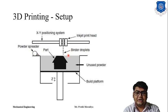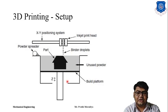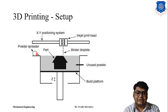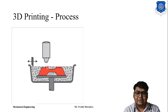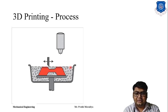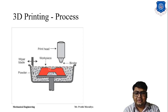A powder spreader adds another layer of powder and the process repeats. Once each layer is printed, the build platform is lowered by one layer, new powder is spread, and the inkjet prints again. The binder solidifies the powder on the bed and we get a solid cross-section, then the next layer is printed.